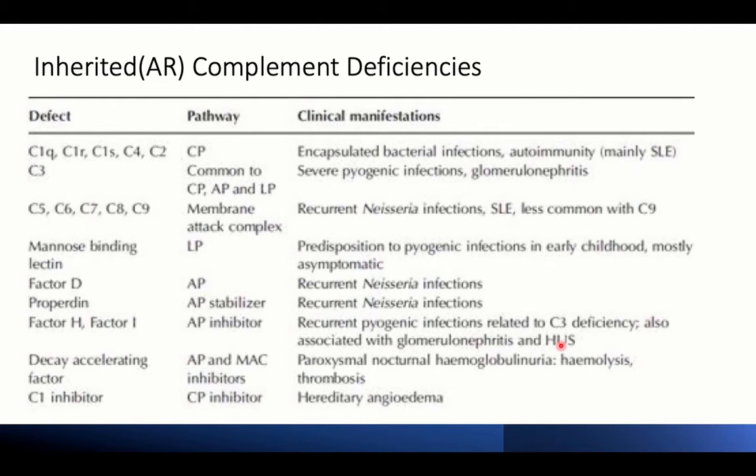Decay accelerating factor is one of the regulators of complement system on cell surfaces. Its deficiency renders cells susceptible to complement-mediated lysis, presenting as paroxysmal nocturnal hemoglobinuria, where there is recurrent hemolysis and liability to thrombosis.